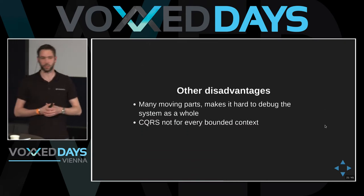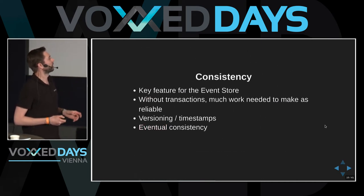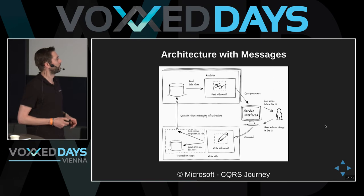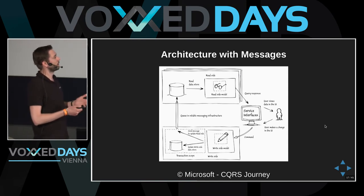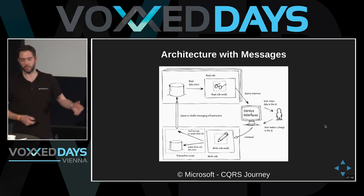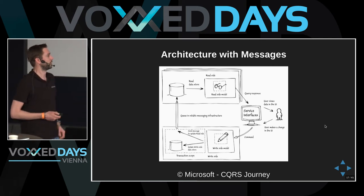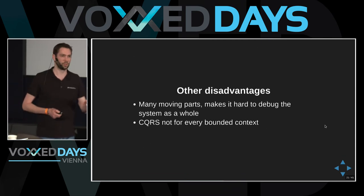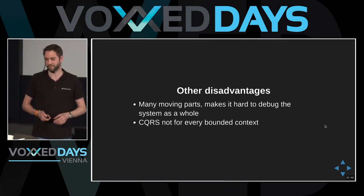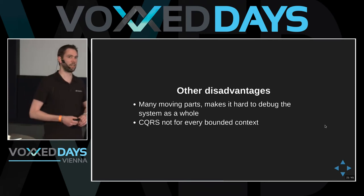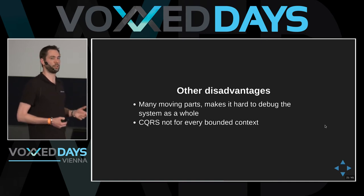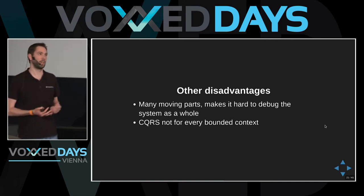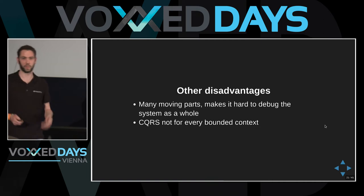Another disadvantage is many moving parts. Without CQRS you only have one side to keep up, but here you see two sides, two stores. If something goes wrong, it can be really difficult to find where it went wrong. Keep in mind: CQRS is not for every bounded context. Make a good decision when you start using it — is the environment complex enough? What are the benefits over taking the simple approach?